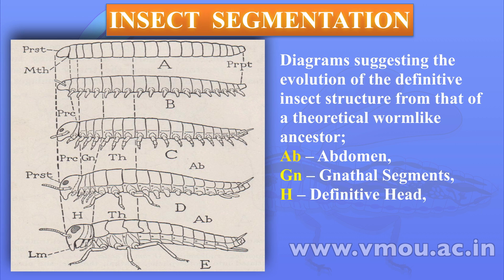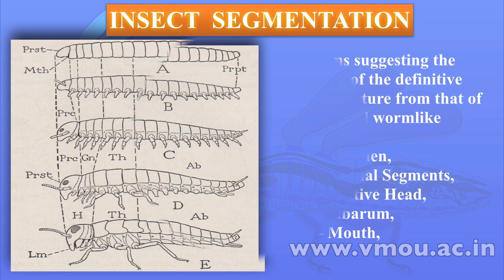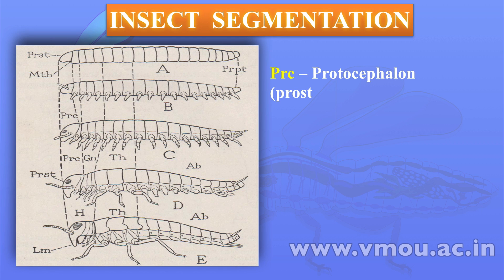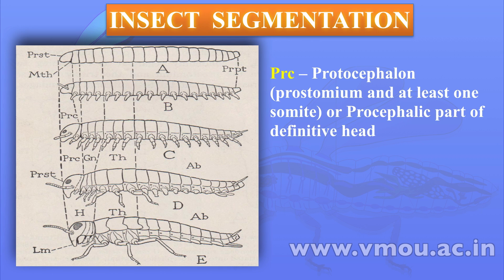In diagram B, you will see that except the prostomium, all segments are metamerically having appendages on the lateral side. In diagram C, you will see that the appendages are a little larger, as well as the paraproctor or the last abdominal segment has got an anal side.